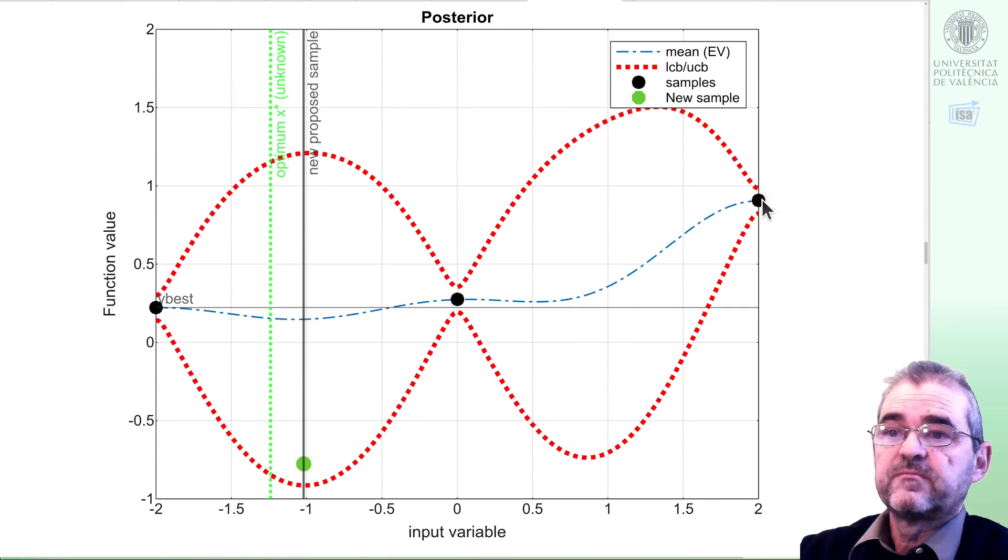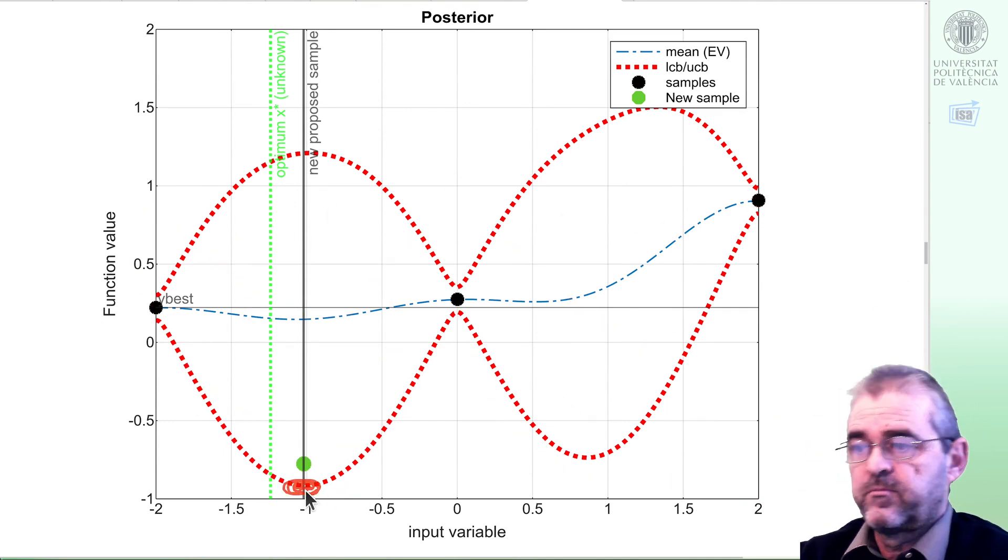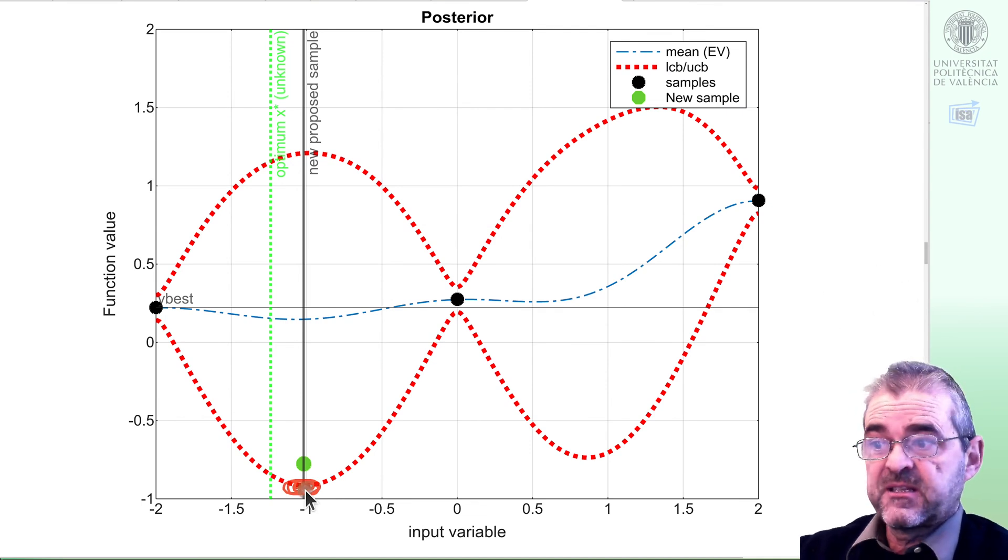So I incorporate that new green sample to the historical record and repeat again. This is the new sample. And then this is the new interpolation. This is the new point where the lowest lower confidence bound is achieved. So this is the new suggestion. And as you look here, it's beginning to approximate the global optimum point, optimum sample.